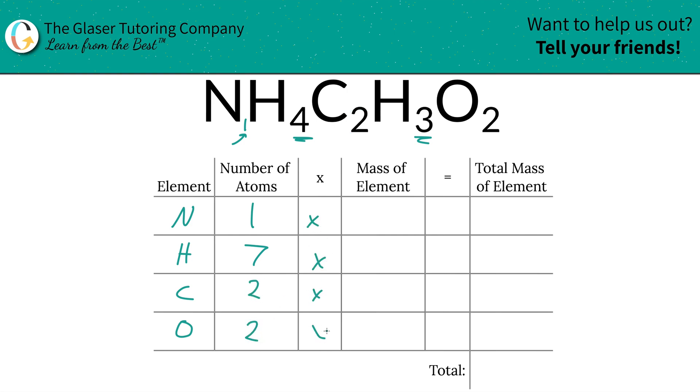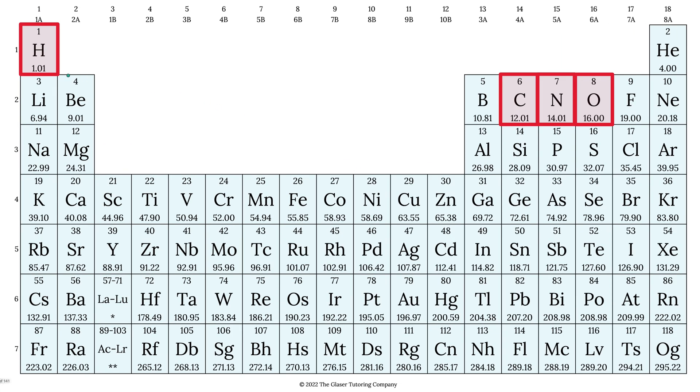We're going to take those number of atoms and multiply it by the mass of each element. That's where the periodic table comes into play. We've highlighted all the elements. Hydrogen is 1.01, carbon is 12.01, nitrogen is 14.01, and oxygen is 16.